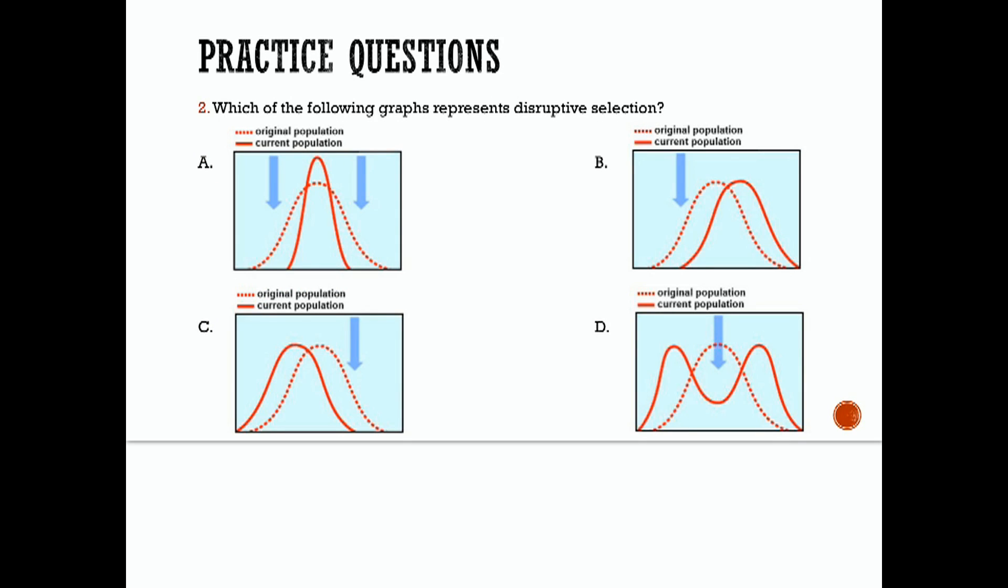Number two, which of the following graphs represents disruptive selection? Look back in your notes if you don't remember and see what the graph looks like for disruptive selection. Remember it favors two or more extreme phenotypes, the ones on the end, over an intermediate one. Over time, the intermediate phenotype becomes rare and may even disappear, and the two extreme phenotypes are very common. That matches up with D.